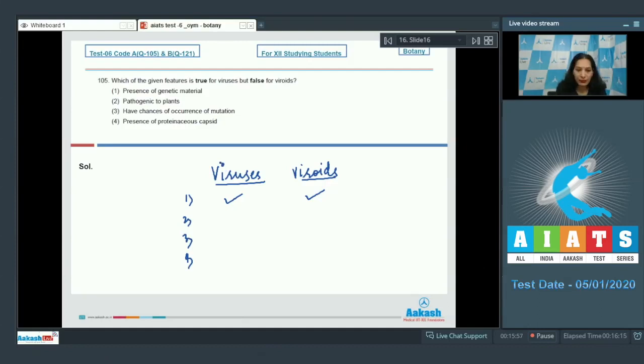Second option says pathogenic to plants. Viruses are pathogenic to plants, viroids are pathogenic to plants only. For example, potato spindle tuber disease is caused by viroids. Third: Have chances of occurrence of mutation. If they have genetic material, definitely they have chances of occurrence of mutations. So this is also true for both.